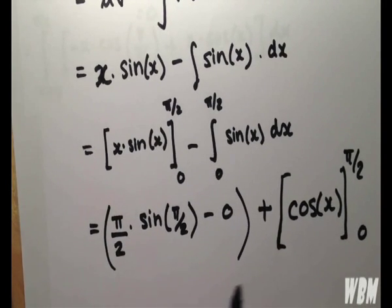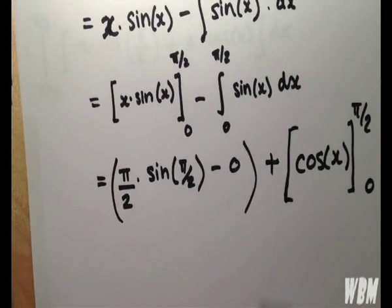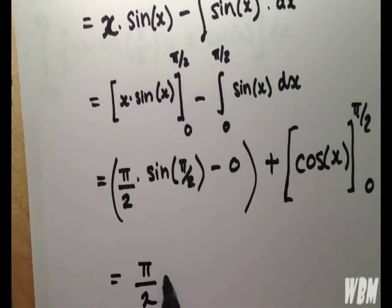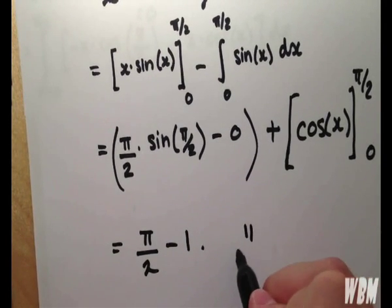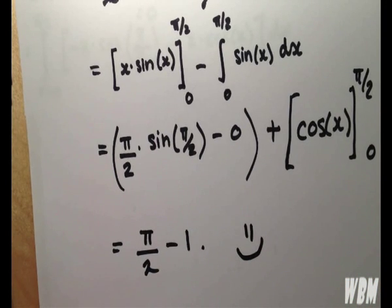So simply stick the values in, and we have an answer, pi over 2 minus 1. I hope that was able to help you.